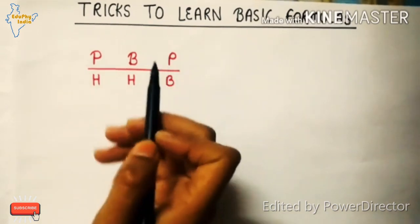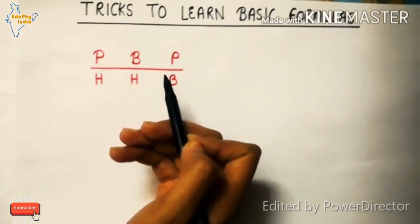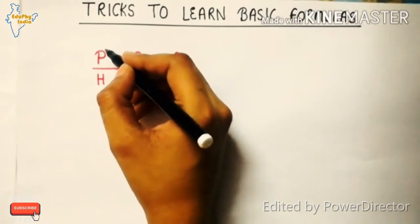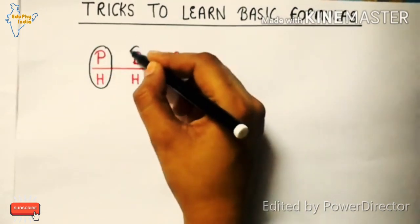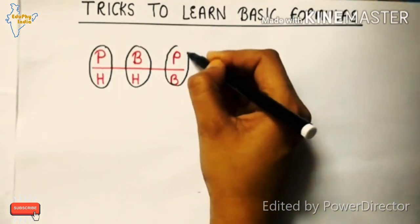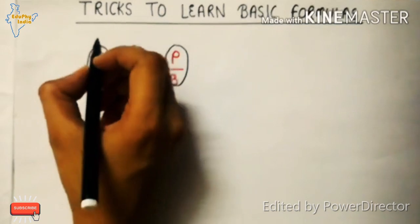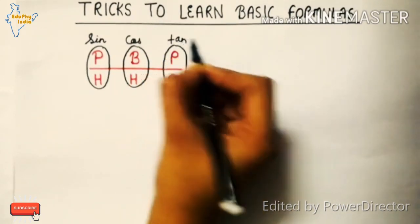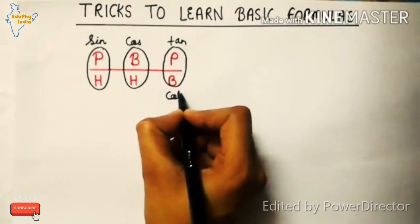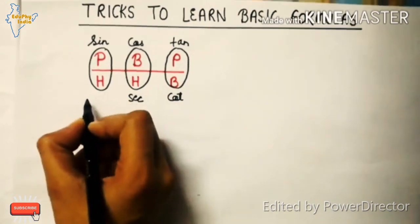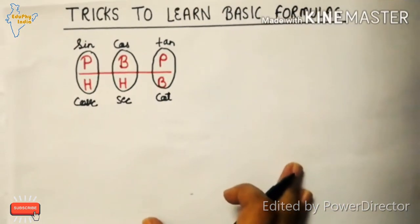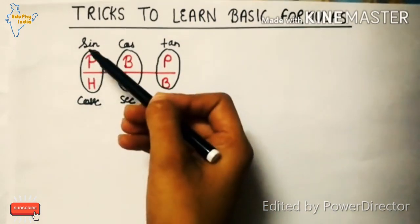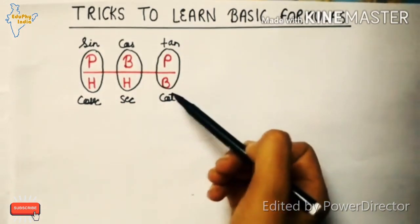Here is a shortcut to help you remember. Write P, B, P, H, H, B. Now draw circles and write the functions in order: sin, cos, tan on the top, and their opposites — cot, sec, cosec — on the bottom. Say it once more: sin, cos, tan, cot, sec, cosec.